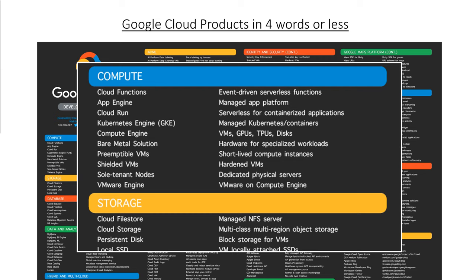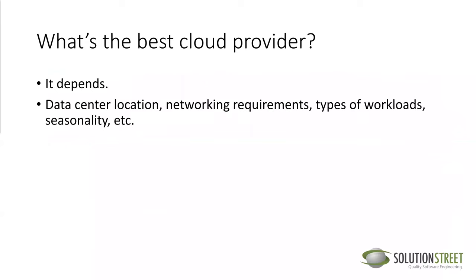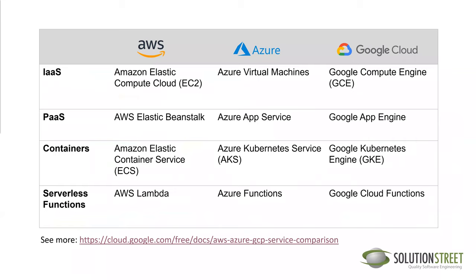On naming conventions: AWS uses somewhat cryptic names — EC2, Elastic Beanstalk — whereas Azure and Google Cloud are more straightforward. Azure has App Service, Google has App Engine. For serverless functions, AWS calls it Lambda, but Azure and Google Cloud just call them Functions and Cloud Functions respectively.